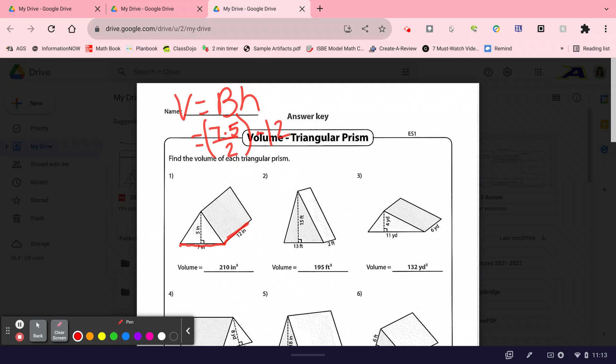If number one was capital V equals B times H, we would have the base and the height of the triangle are 7 and 5. So it would be 7 times 5 divided by 2, and the height of the prism would be 12. So that's the problem you should have worked out to get number one.